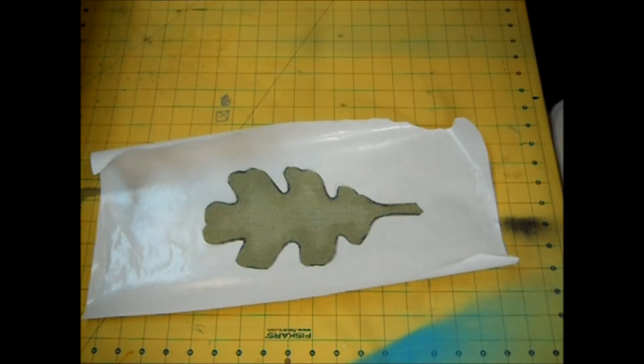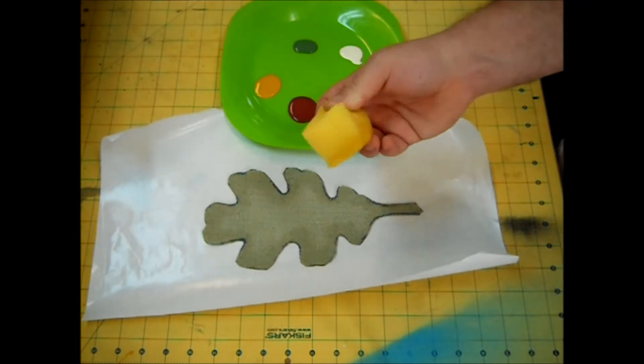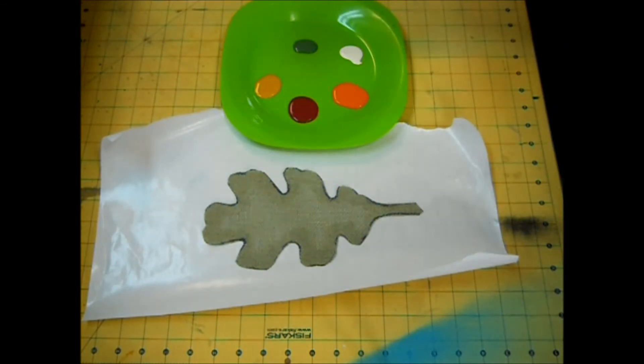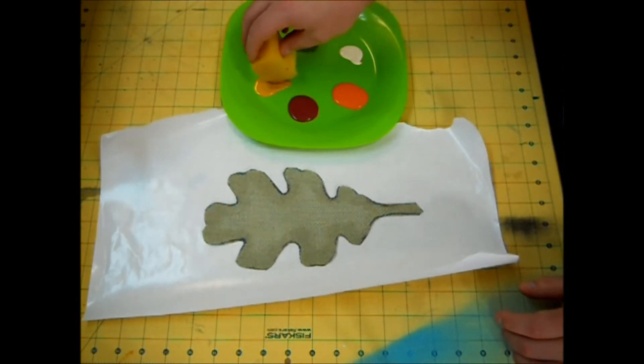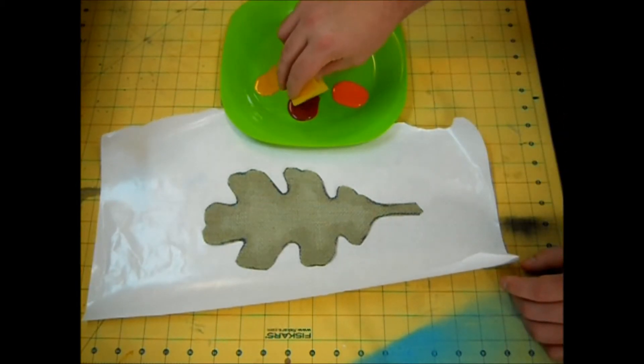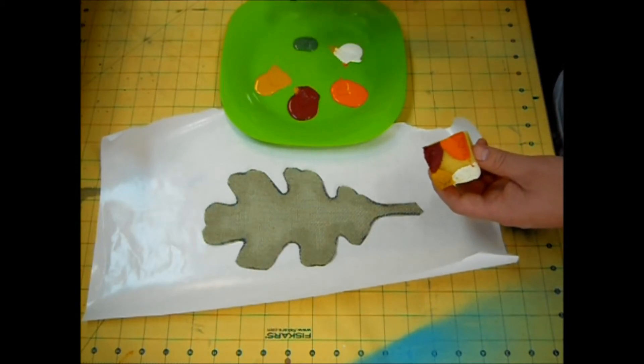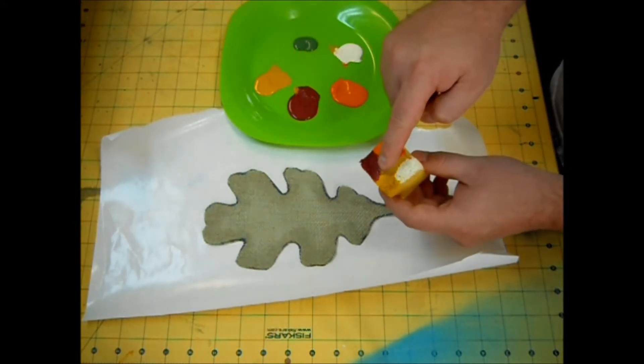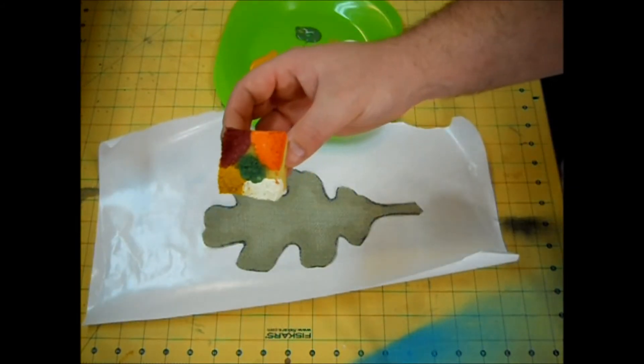The next step we're going to do is paint the leaf. On this plastic plate, I have a little bit of all five of my colors. You want to take your piece of sponge, and the way I load it is I'll start with one corner and I'll put it in one color. Then I take a different corner and put it in the other color. Now for the green, just take your thumb or finger and put a little bit in the middle here. And your sponge should look something like this.